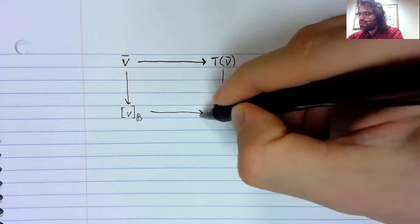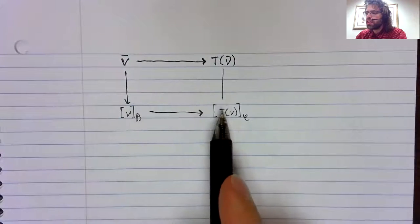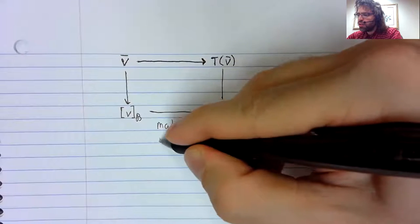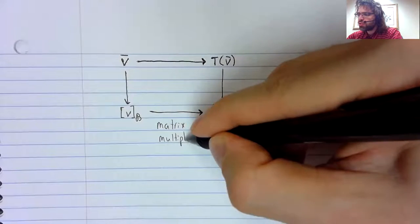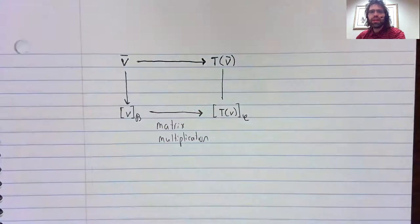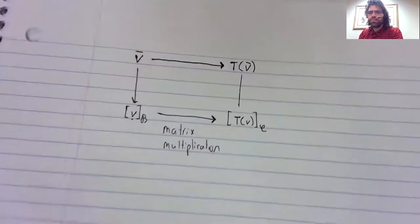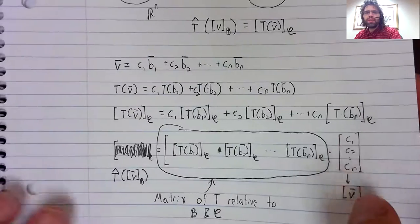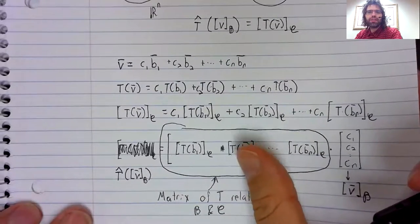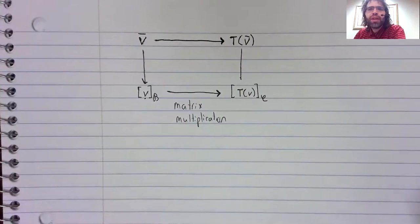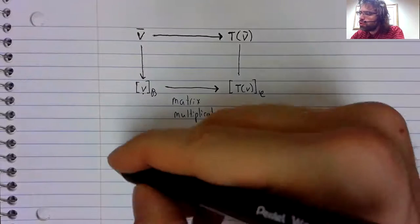And we've seen that going from here to here is done via matrix multiplication. To go from this vector to this vector, we need to multiply by this matrix. A kind of technical term, I'm not sure your textbook uses it.